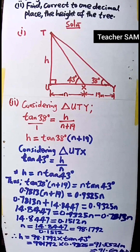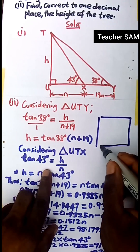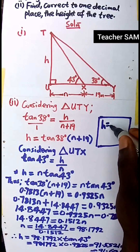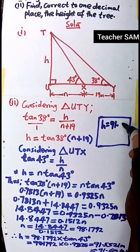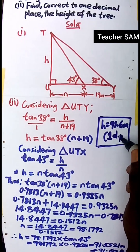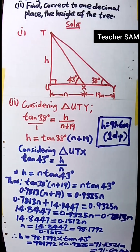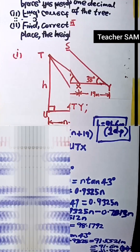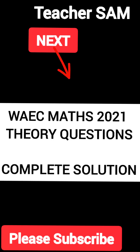So that is 1 decimal place. Our H equals 91.6 meters — that is the answer to this question to 1 decimal place. I advise you to go over this and make sure you understand it. See you again in the next video where we solve the next past question based on this subject.